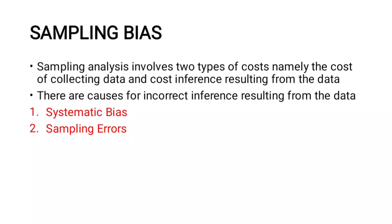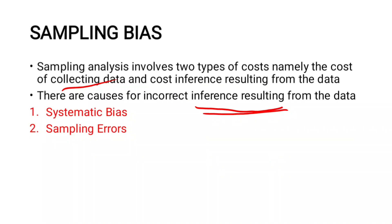Sampling Bias. When we collect data, there can be barriers that lead to incorrect inferences and conclusions. There are many causes and reasons for this. These include systematic bias and sampling errors, both of which lead to incorrect inferences.